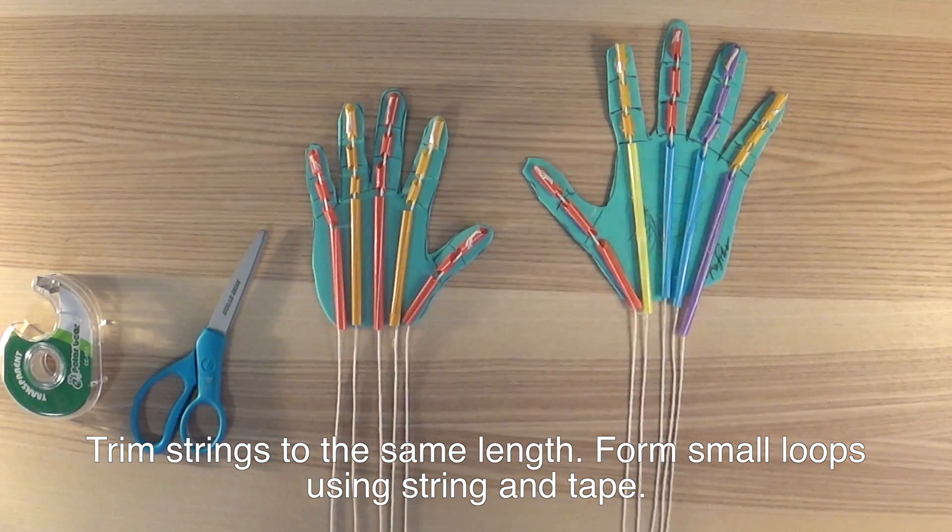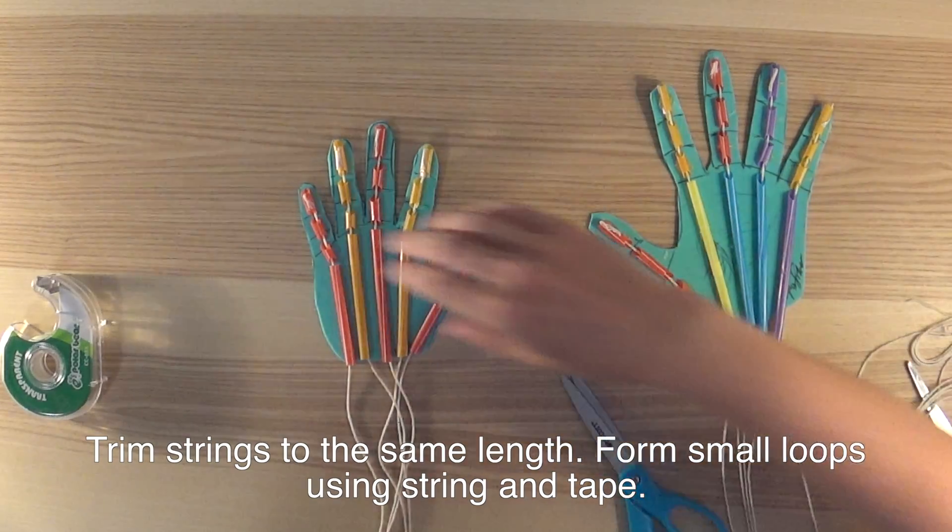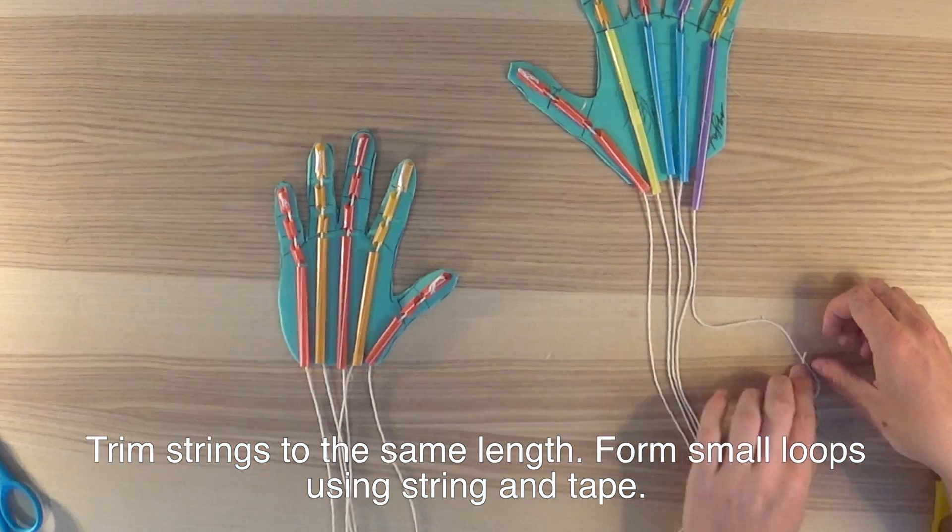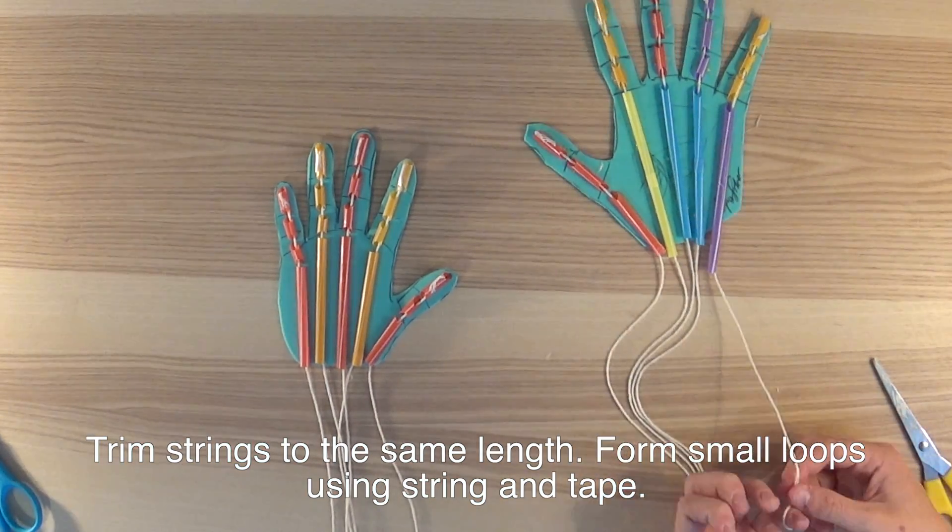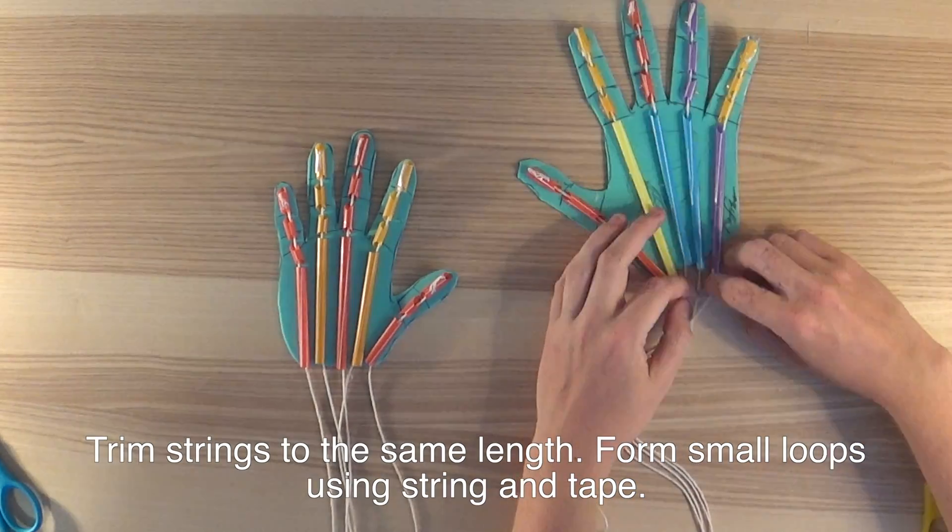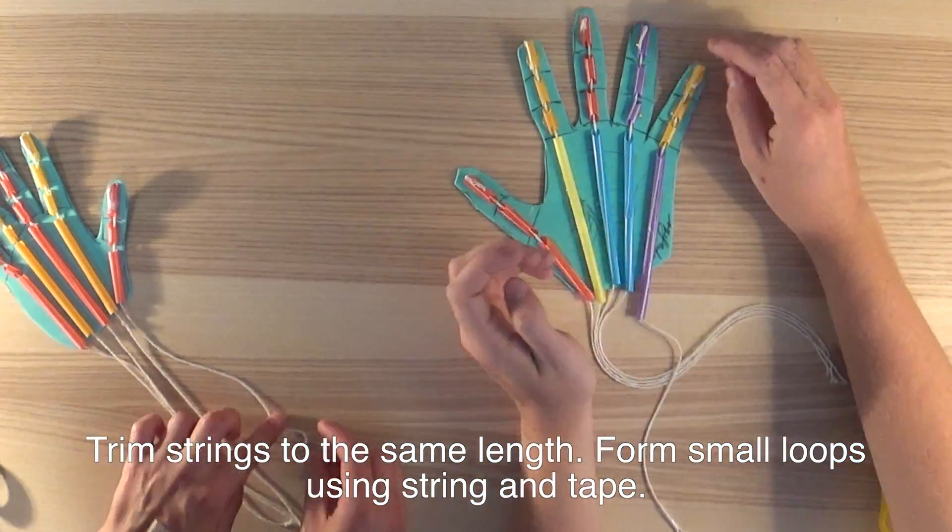Trim the strings to the same length, and then form loops using string and tape. To do this, you simply bend the string upwards and tape. Make sure that the loops fit your fingers. This is how we will be controlling the hand puppet using our own hands.